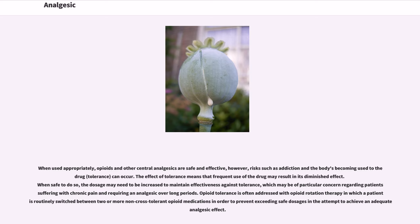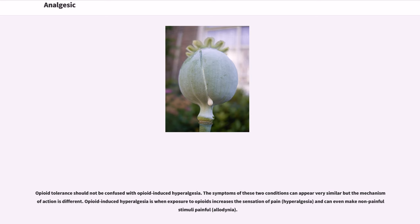When used appropriately, opioids and other central analgesics are safe and effective; however, risks such as addiction and tolerance can occur. The effect of tolerance means that frequent use may result in diminished effect, and the dosage may need to be increased to maintain effectiveness, which is of particular concern for patients with chronic pain. Opioid tolerance is often addressed with opioid rotation therapy, switching between non-cross-tolerant opioids to prevent exceeding safe dosages. Opioid tolerance should not be confused with opioid-induced hyperalgesia, where exposure to opioids increases the sensation of pain and can make non-painful stimuli painful (allodynia).